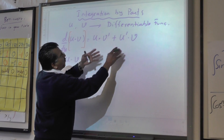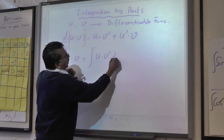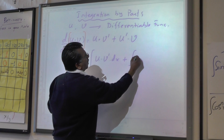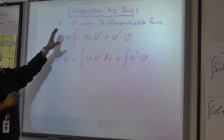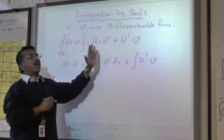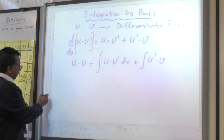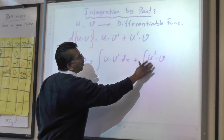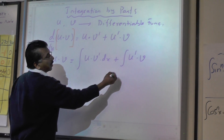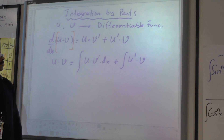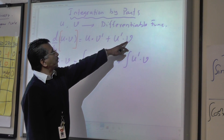So: integral of u times v' dx plus integral of u' times v. If the derivative of this function is whatever that is, the entire derivative goes back to uv. What I'll do next is solve for u' v — I'm going to use this and subtract to get the integration by parts formula.